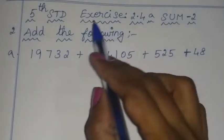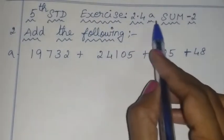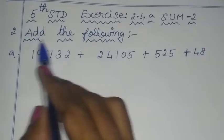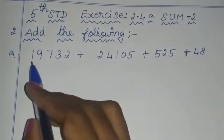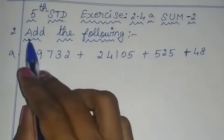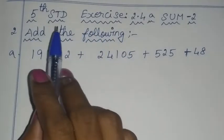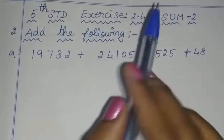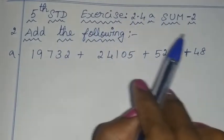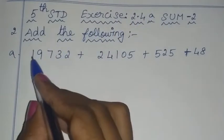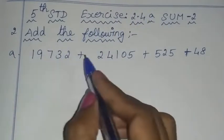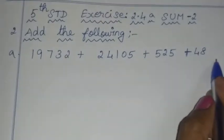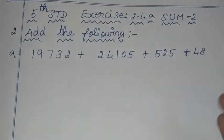Hello children! In this exercise 2.4a, sum number 2, add the following. Here we will add the sum — we will add row-wise and column-wise.